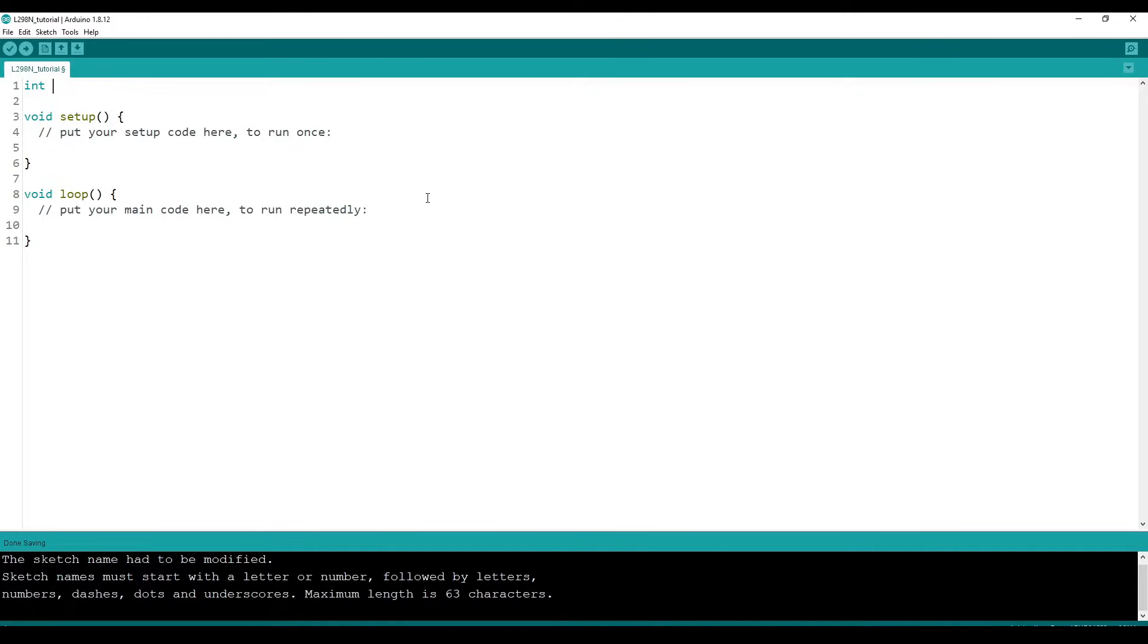Now let's work on the code. First let's make variables for the control pins. Motor 1 pin 1 was pin 2 on the Arduino, motor 1 pin 2 was 3, motor 2 pin 1 was 4, and motor 2 pin 2 was 5.